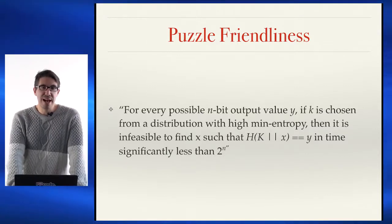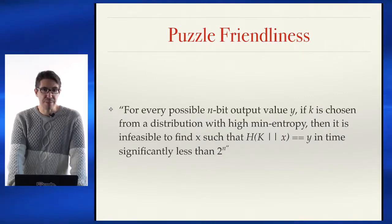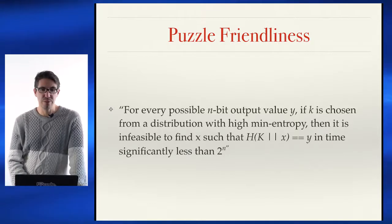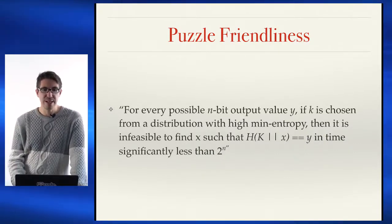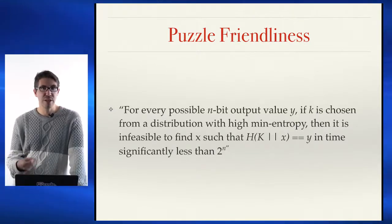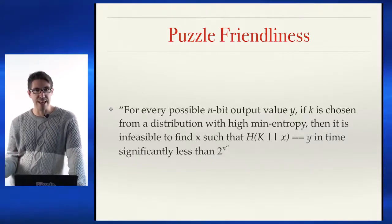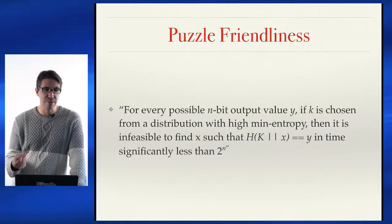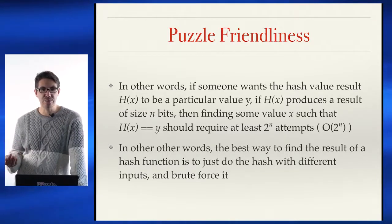The last aspect that makes a hash a good cryptographic hash — especially for Bitcoin and other proof-of-work blockchains — is that it's puzzle-friendly. That is, for every possible output value of n bits, if K is chosen from a high min-entropy distribution, it's infeasible to find X such that H(K concatenated with X) equals Y in time significantly less than 2 to the n. Really all it means is that there are no shortcuts.